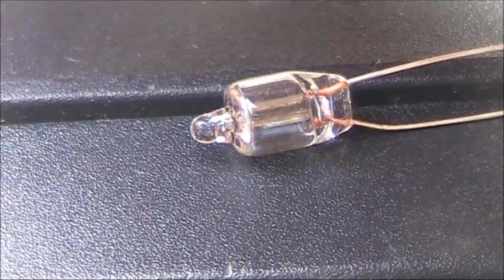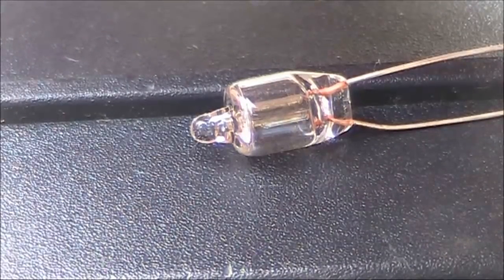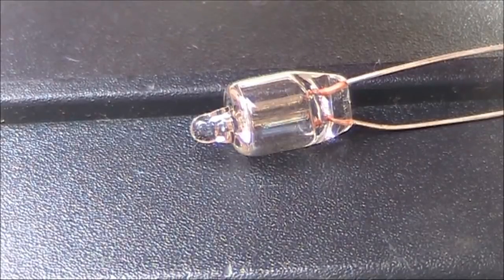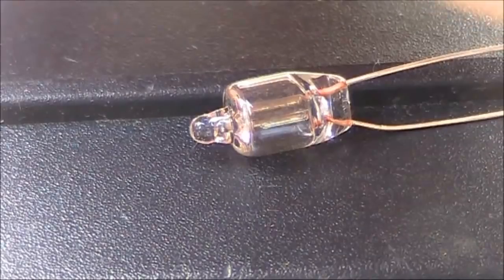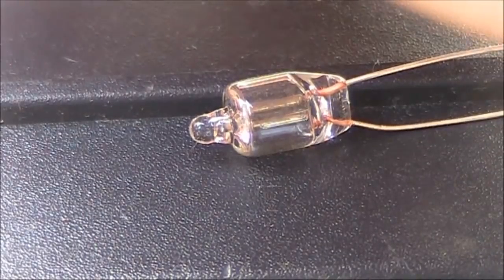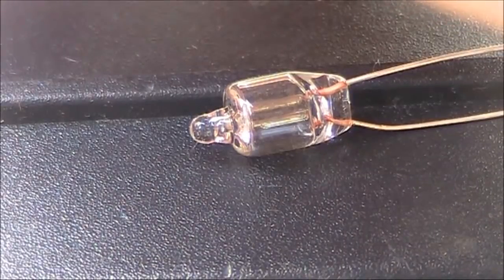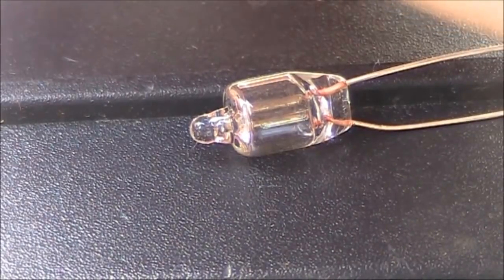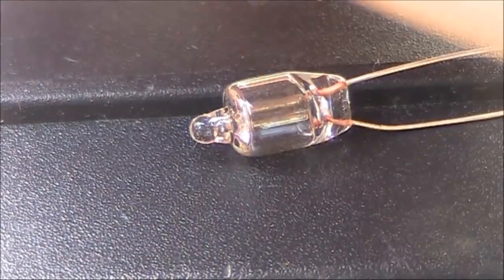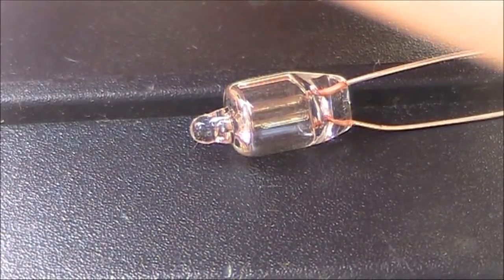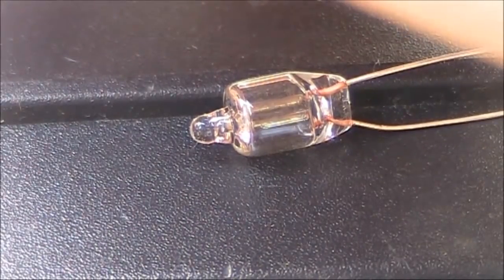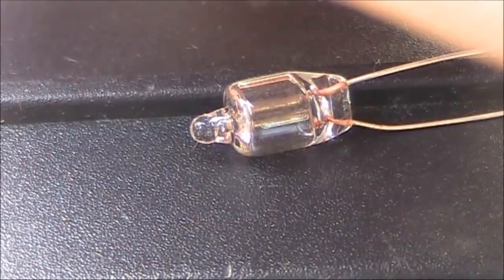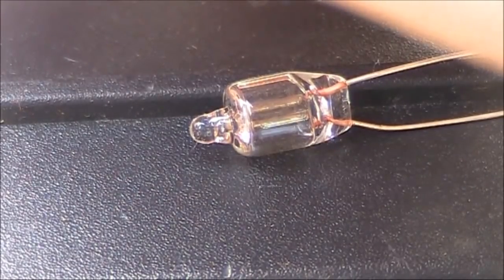When you look inside a neon lamp you'll see two thick poles, thicker than the wires going to the circuitry. As you increase the voltage across them, nothing happens until you get to about 90 volts. That's when it breaks down and you see illumination from the globe. Only a very small amount of current is required for that to happen, making neons very efficient.